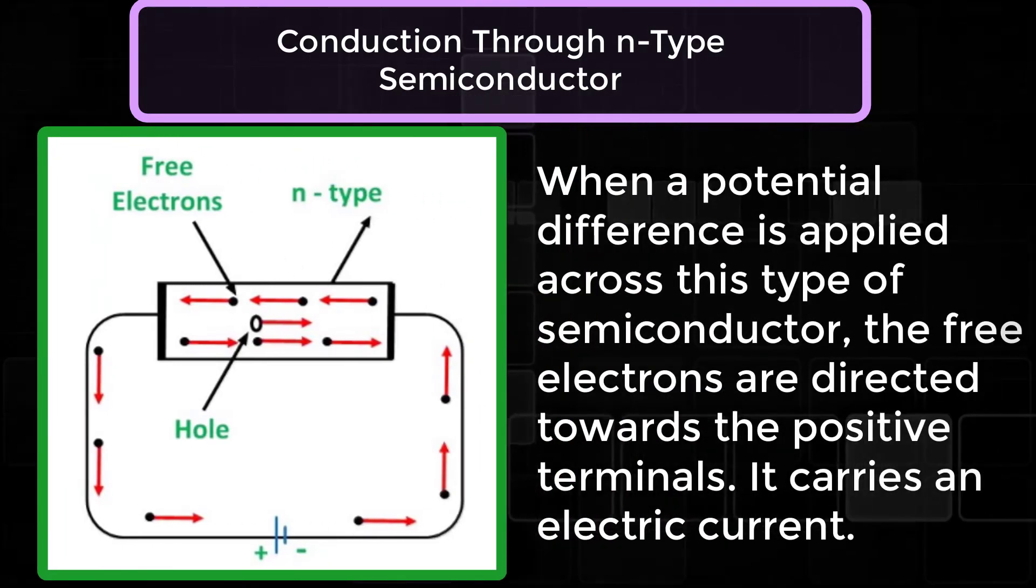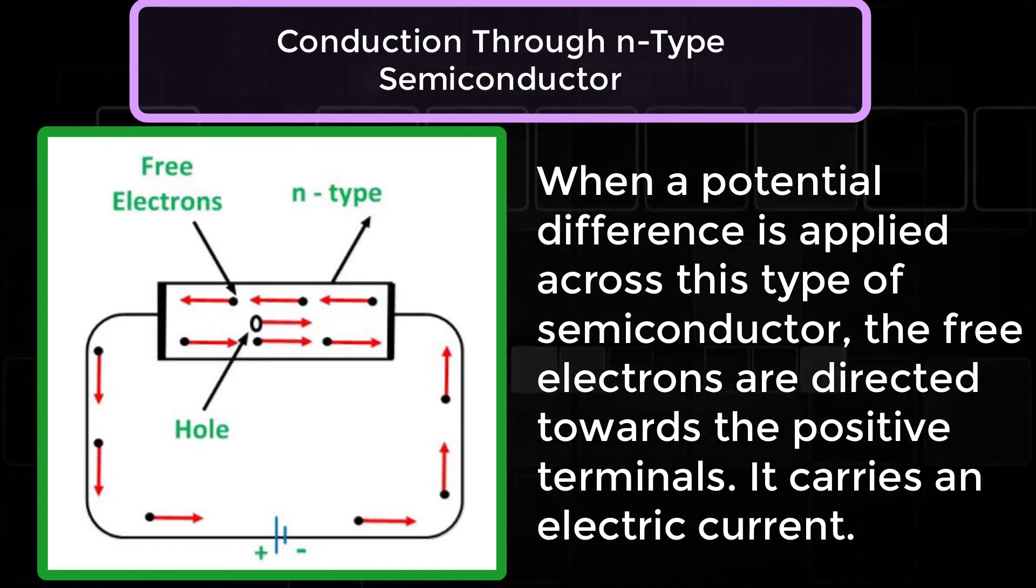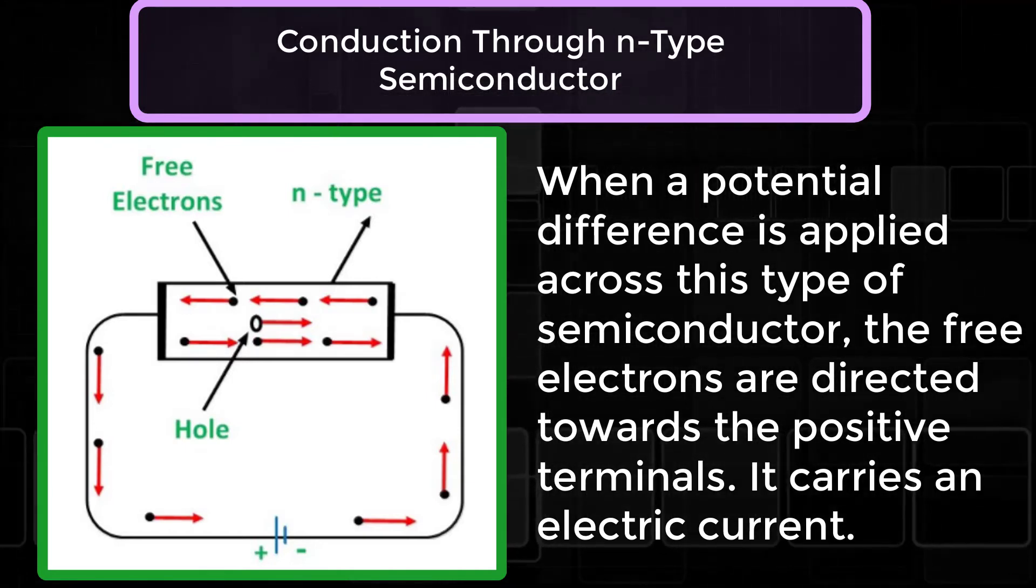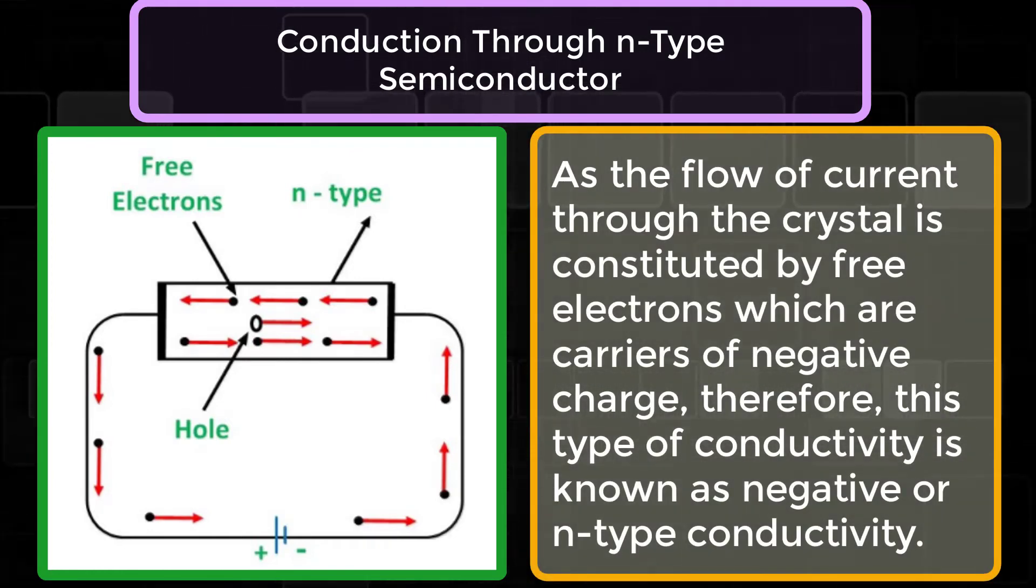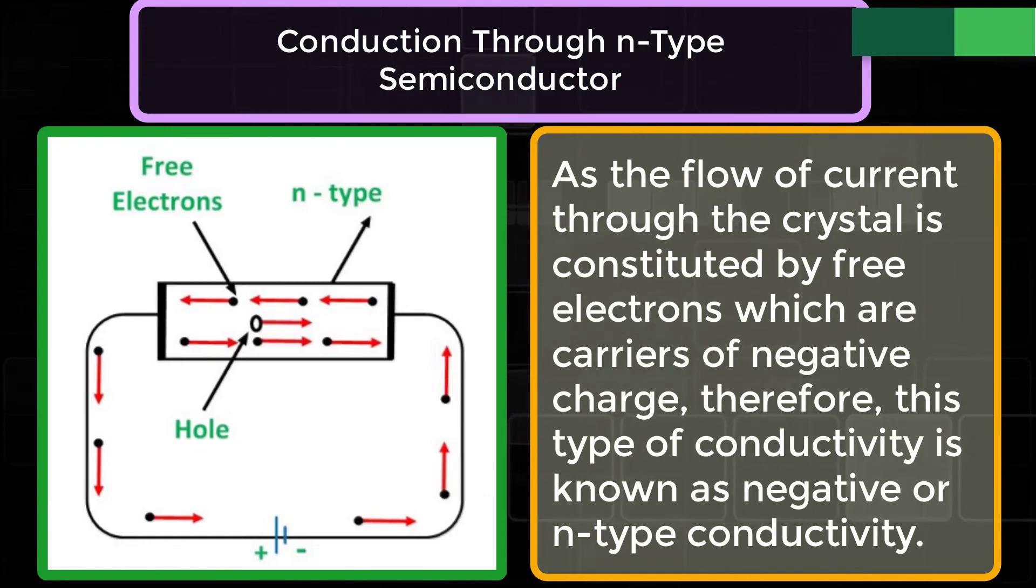When a potential difference is applied across this type of semiconductor, the free electrons are directed towards the positive terminals. It carries an electric current as the flow of the current through the crystal is constituted by free electrons, which are carriers of negative charge.